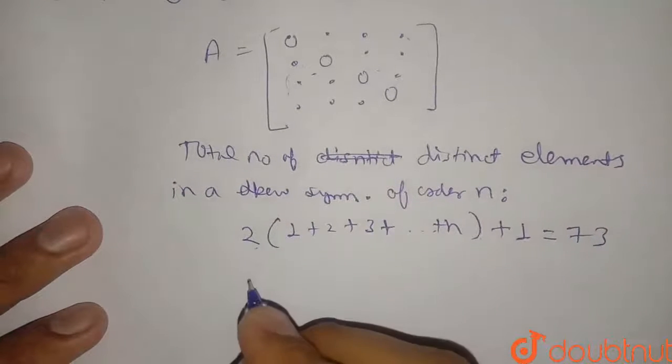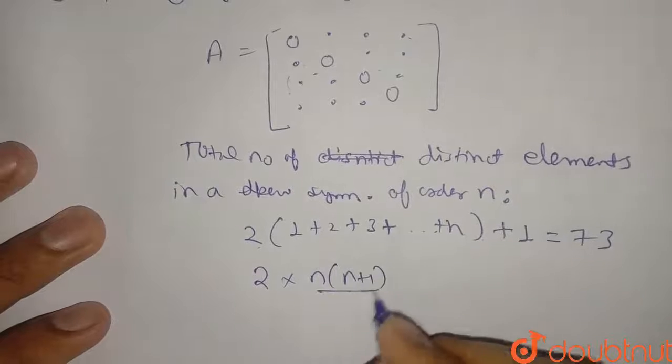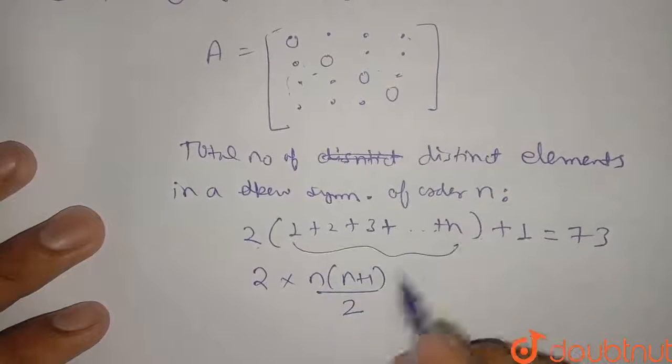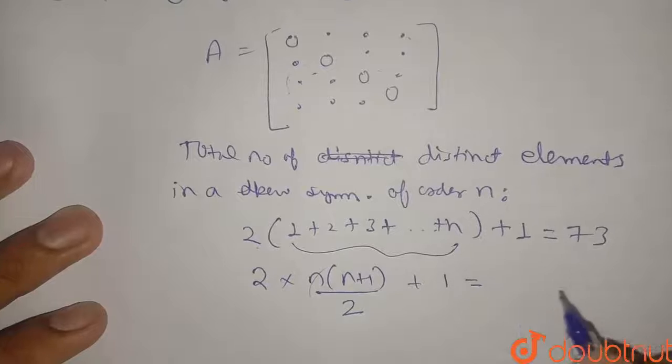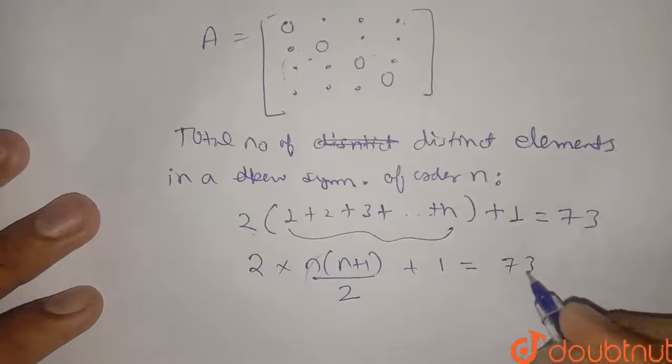So this is a series. So I can write 2 into n into n plus 1 by 2. This is the summation, plus 1 is equal to 73.